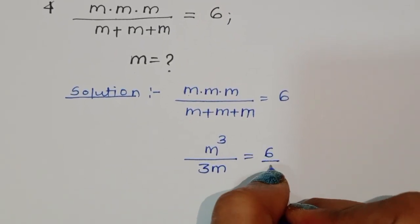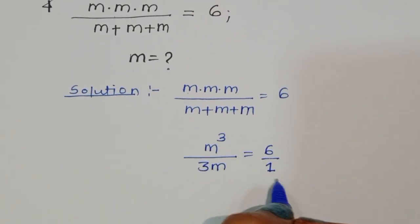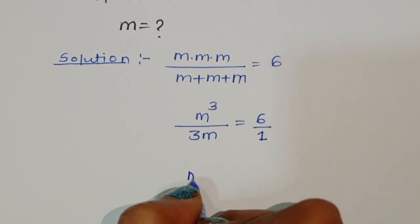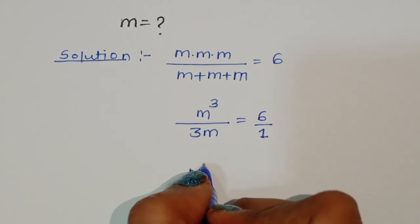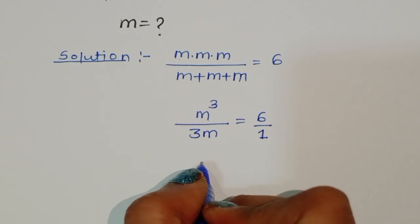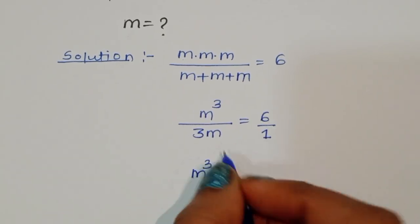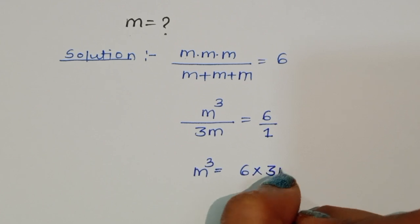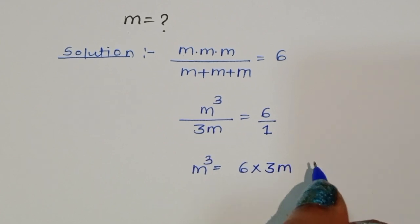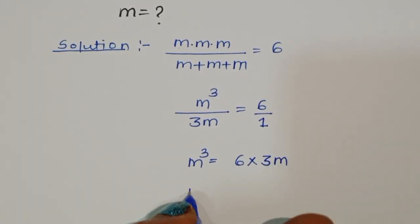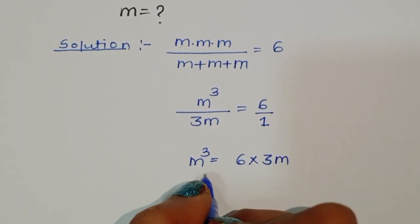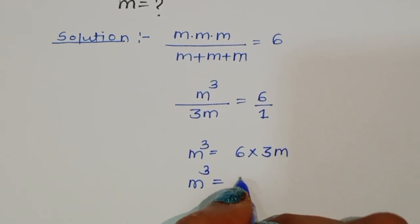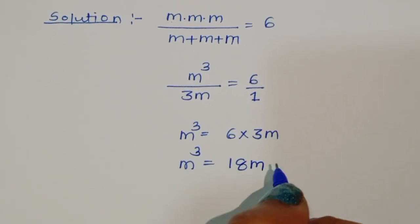Now we can do cross multiplication. After doing cross multiplication, we get m cubed is equal to 6 times 3m. So m cubed is equal to 18m.